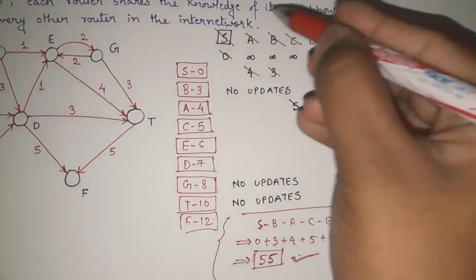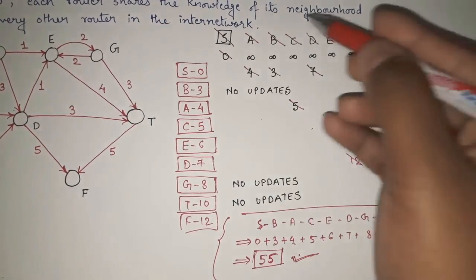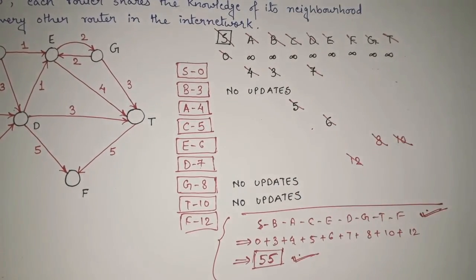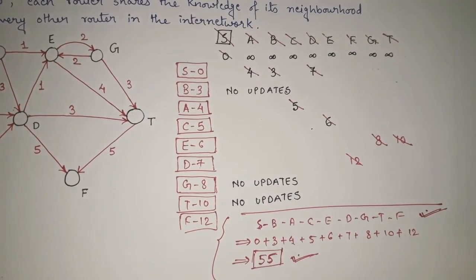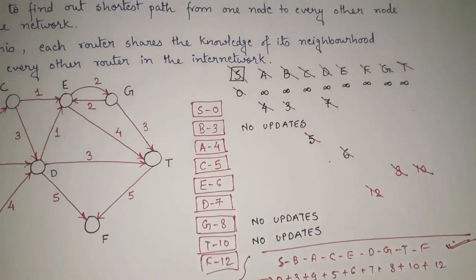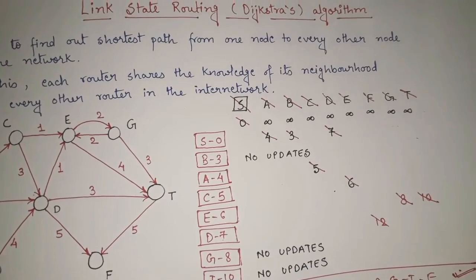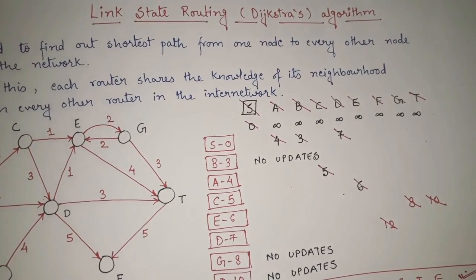So these are all the things we can get from Dijkstra's algorithm — the minimum path sequence, individual shortest distances, and the minimum total cost. If you do it step by step, it is actually very easy. I hope you have understood the whole Dijkstra's algorithm. In case you still have any doubt, you can always ask in the comment section. Thank you so much.